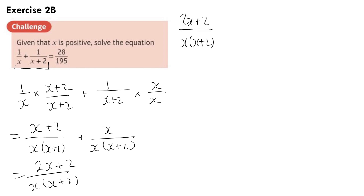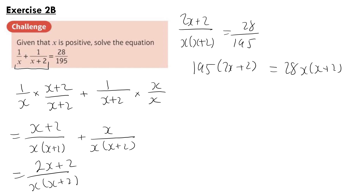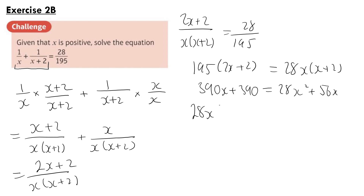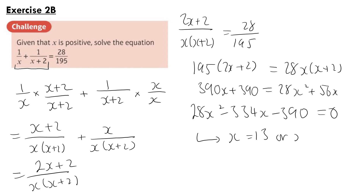Now we can cross multiply to get 195(2x+2) equals 28x(x+2). Expanding brackets on both sides, we get 390x + 390 equals 28x² + 56x. Moving all terms onto one side, we get 28x² - 334x - 390 equals 0. Putting this into your calculator, you should get x equals 13, or x equals minus 15 over 14.